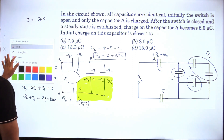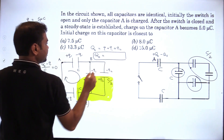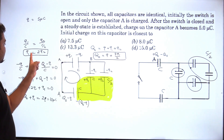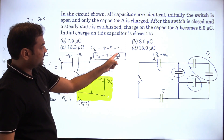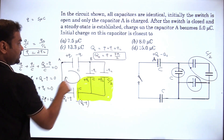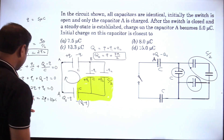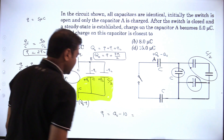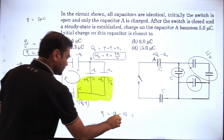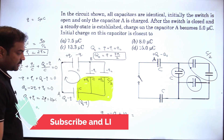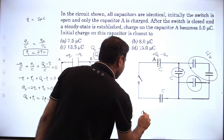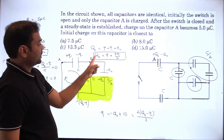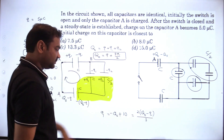We can write it in terms of q₁. Since q₂ = q₁/2, substituting: q₀ = q + q₁ + q₁/2 = q + 3q₁/2. From the earlier relation, q₁ = 10 - q₀. Substituting back: q₁ = (q₀ - q) × 2/3, which equals (q₀ - 5) × 2/3.